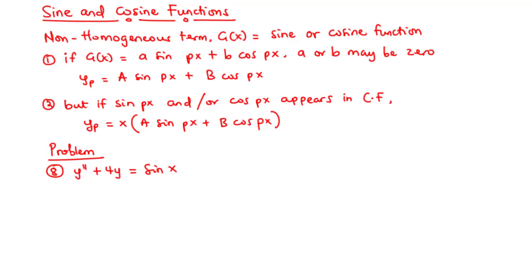We are still solving problems on second order linear non-homogeneous differential equations with constant coefficients. In this lesson, we are going to consider problems or examples where the non-homogeneous term is equal to either a sine or a cosine function.